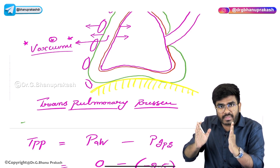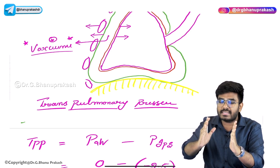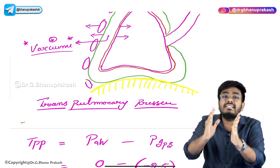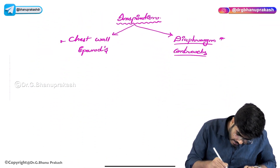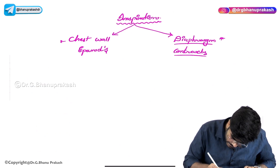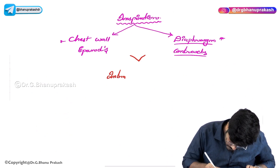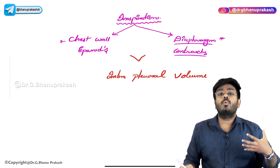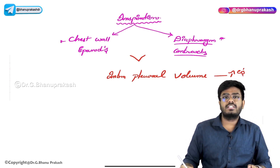When the parietal pleura is moving away from the visceral pleura, what is happening to the intra-pleural space? The intra-pleural space or intra-pleural volume is increasing. With this chest wall expansion and diaphragm contraction, the intra-pleural space increases.